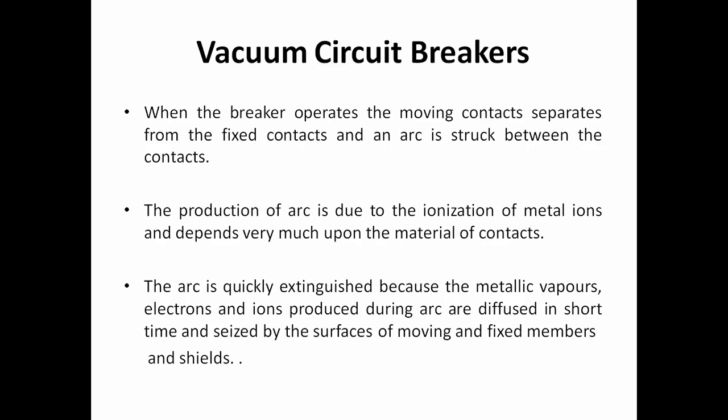When the breaker operates, the moving contacts separate from the fixed contact and an arc is struck between these two contacts — the same as in oil circuit breakers, air blast circuit breakers, and SF6 circuit breakers. In the case of a vacuum circuit breaker, when the breaker operates and the moving contacts separate from the fixed contact, an arc is struck between them. The production of arc is due to the ionization of metal ions and depends very much upon the material of the contact. This arc will be quickly extinguished because the metallic vapors, electrons, and ions diffuse in a short time to the surface of the moving and fixed contact members and the shield.